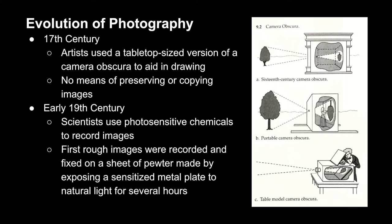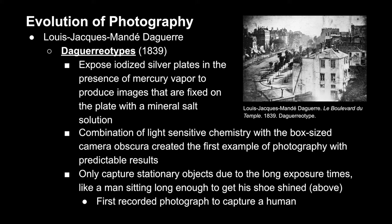Louis Jacquemont Daguerre created a process called the daguerreotype in 1839. The image is created by taking an iodized silver plate and introducing it to a mercury vapor before exposure, after which the image is fixed to the plate with a mineral salt solution.